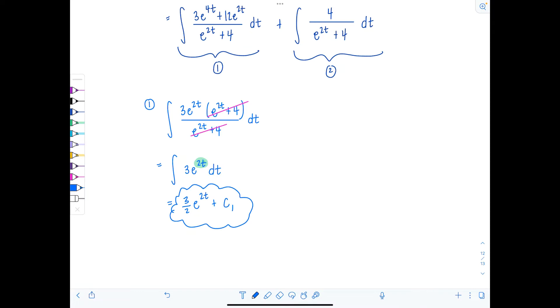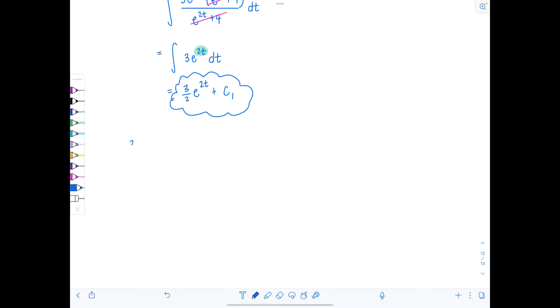Integral 2 is going to take a little bit more work, but it's manageable. So we have, for integral number 2, 4 over e to the 2t plus 4 dt. And anytime I see like e to the 2t, I like to remind myself that that's the same as e to the t squared, right? And the way it's written right now, maybe you're getting feelings of tan inverse, but those aren't correct. So what you want to do is let's go ahead, apply a u substitution, and then see how things kind of play out.